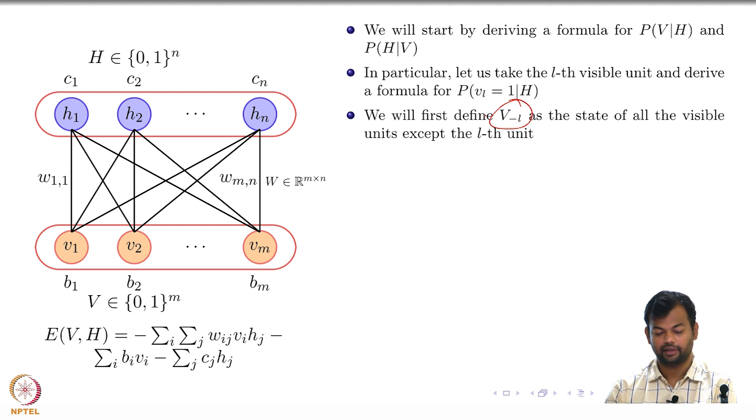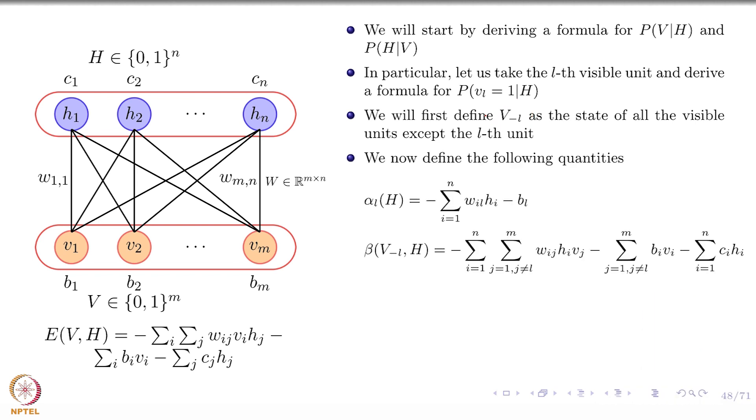I will define two quantities. The first one is alpha which corresponds to the Lth unit. What does alpha actually capture? In this formula, what does alpha_L actually capture? All the terms corresponding to the Lth unit, okay, that's what it captures. Is that clear? Now, what does beta capture? Focus on this. Actually, if you look at these two, these two equations look exactly the same, except that I have removed the terms from the summation which correspond to the Lth term.